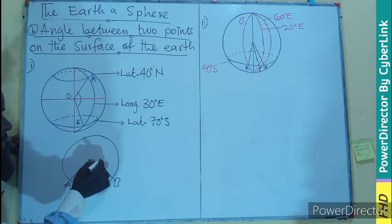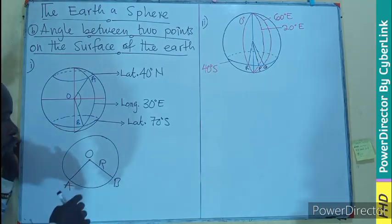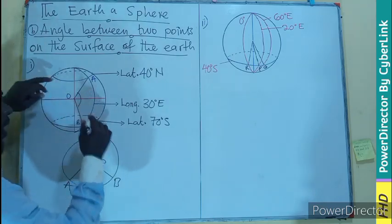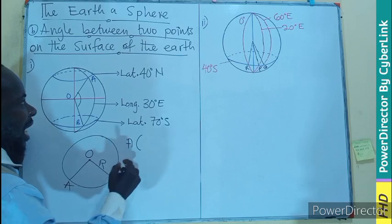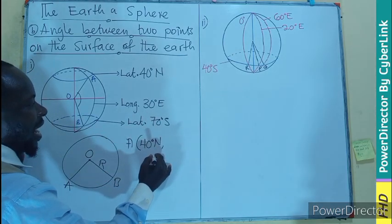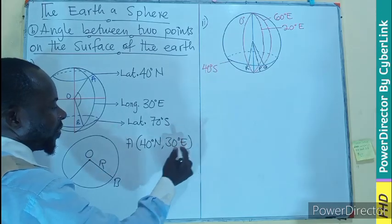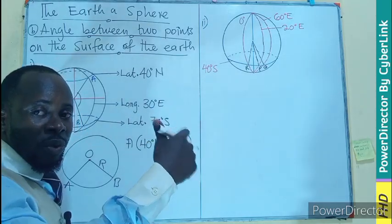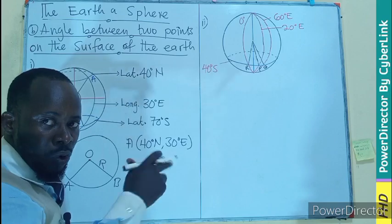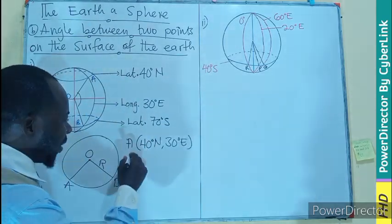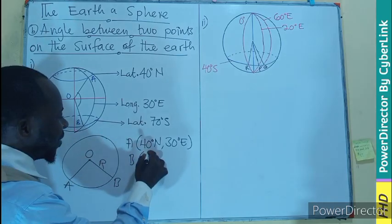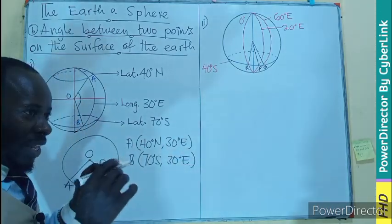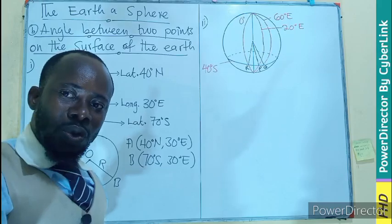The line AB will be the radius of the larger sphere, and at the center we want to know the angle that forms the sector. In writing the coordinates: point A is at latitude 40 degrees north, longitude 30 degrees east. Point B is given as latitude 70 degrees south, longitude 30 degrees east. So both points share a common longitude of 30 degrees east.